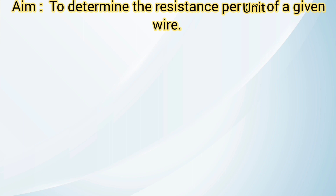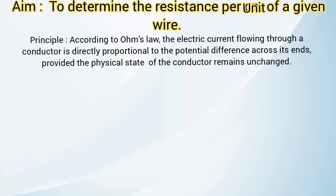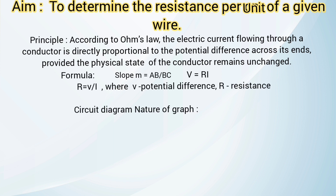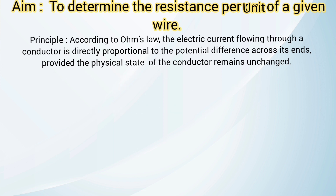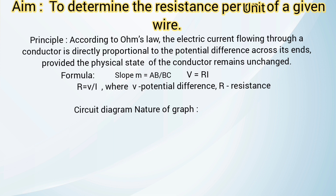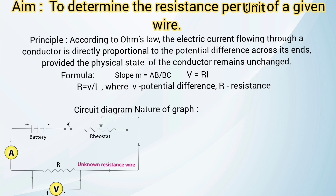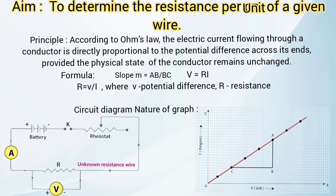The aim of the experiment is to determine the resistance per unit length of a given wire. The principle is Ohm's law: the electric current flowing through a conductor is directly proportional to the potential difference across its ends, provided the physical conditions such as temperature and pressure remain the same. The formula is V = RI. To find the slope, m = AB/BC.